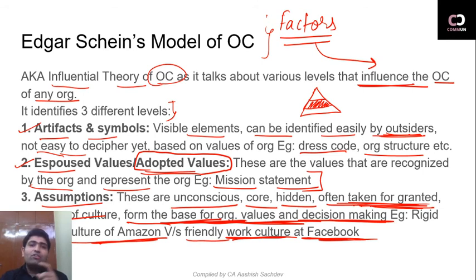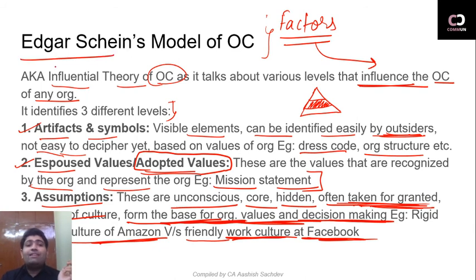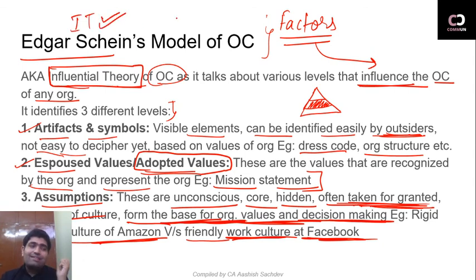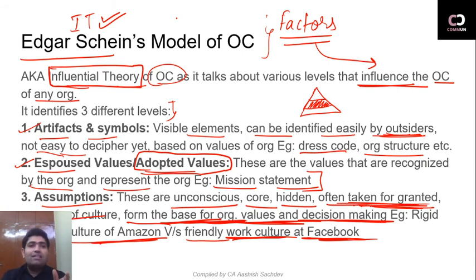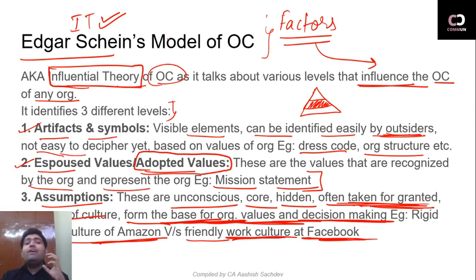I have related all three models so that you learn one thing and are able to relate it with the other models, and also able to differentiate. For Edgar Schein, remember one thing: it is called the Influential Theory. As soon as you remember that, you'll know it divides the factors that influence organizational culture into different levels. The three levels will then be easy to recall: first level — Artifacts and Symbols, the visible part; second — Adopted Values or Espoused Values; third — Fundamental Core Assumptions, the invisible unconscious part, often taken for granted, which form the essence of culture and are very difficult to change.